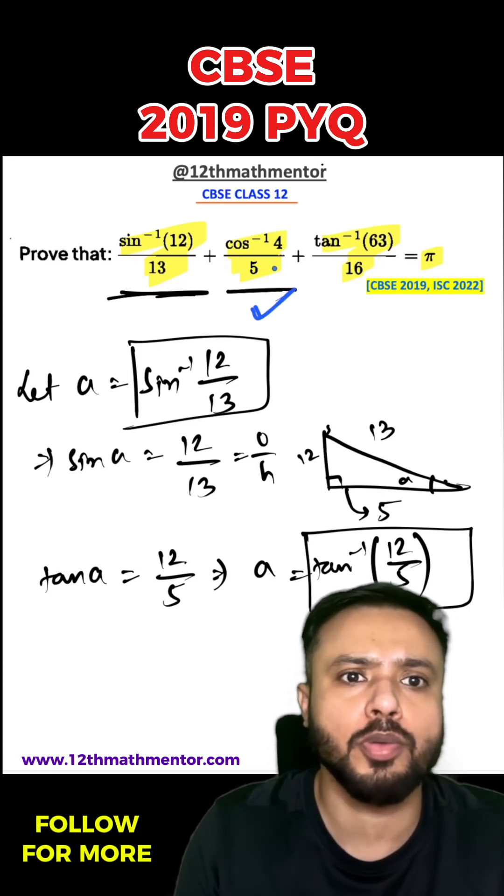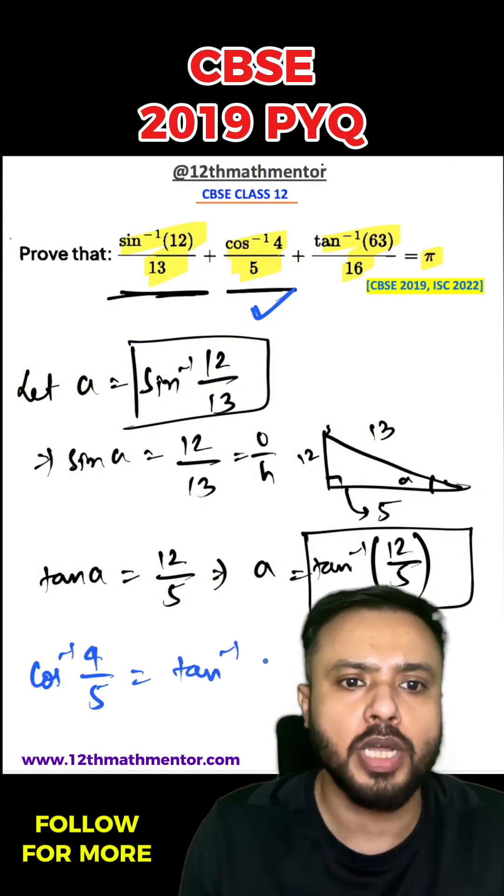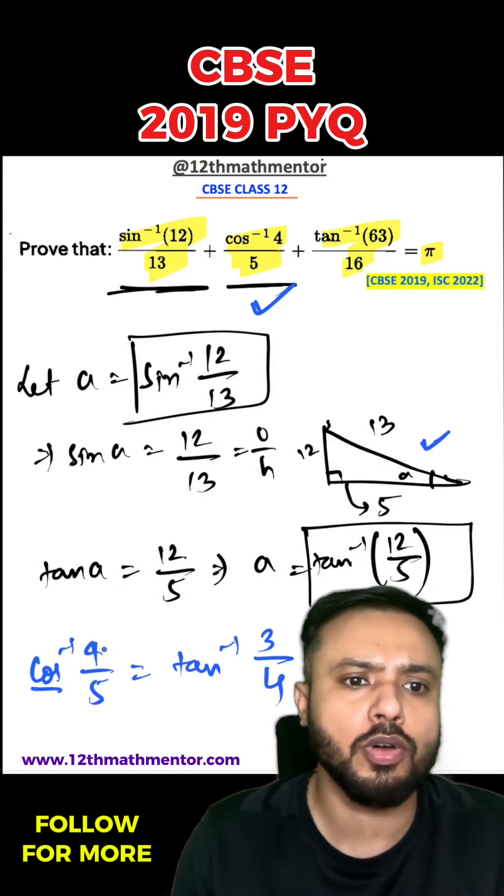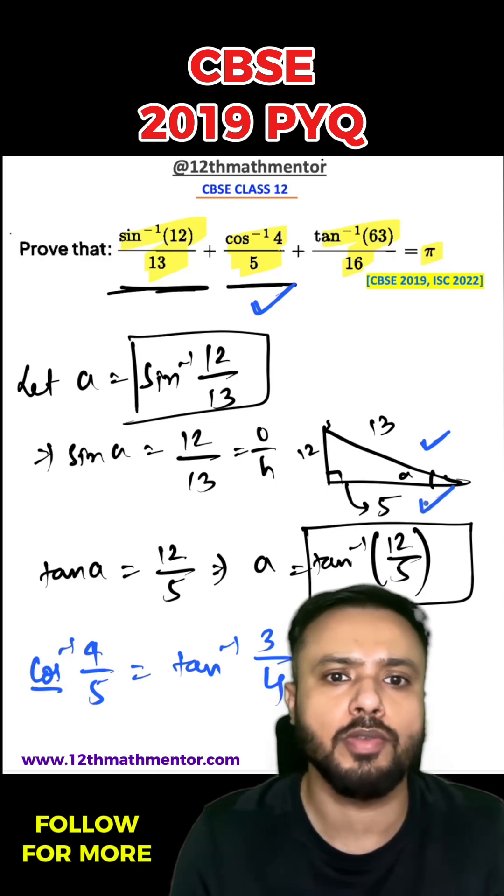And similarly you can convert this cos inverse 4 by 5 in terms of tan inverse. So cos inverse 4 upon 5 would be equal to tan inverse 3 by 4. We'll use similar method to convert cos inverse in terms of tan inverse like the one which we used here.